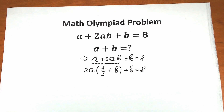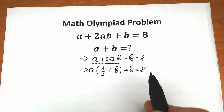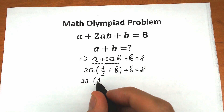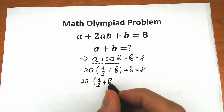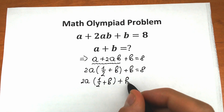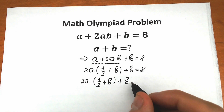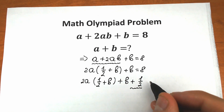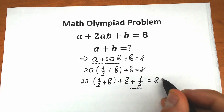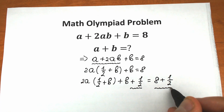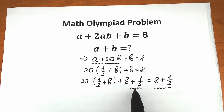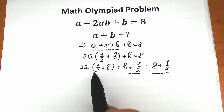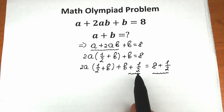Next, let's add 1/2 to both sides. On the left side we add 1/2, and on the right side we have 8 plus 1/2. This changes nothing generally since we do it on both sides. Now we have 2a times (1/2 plus b), plus b plus 1/2, equals 8 plus 1/2.